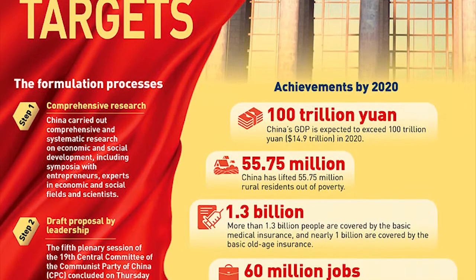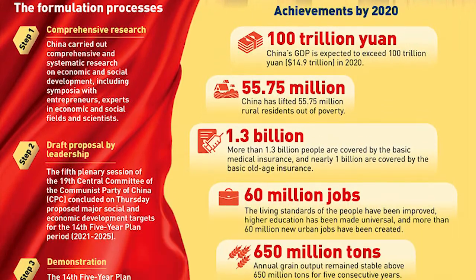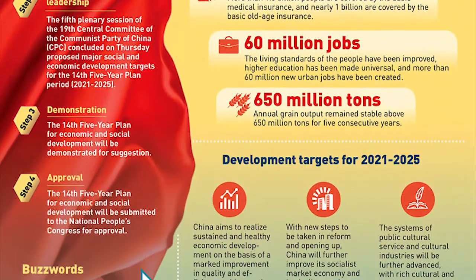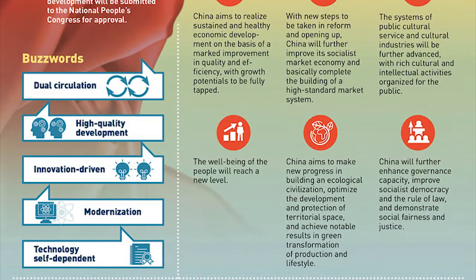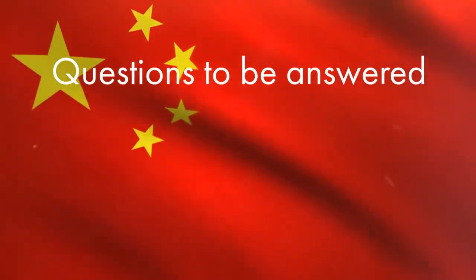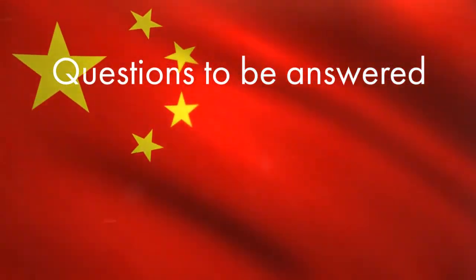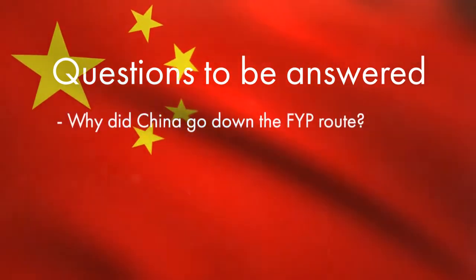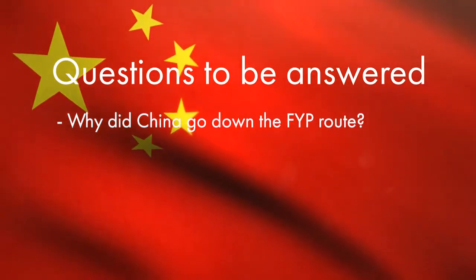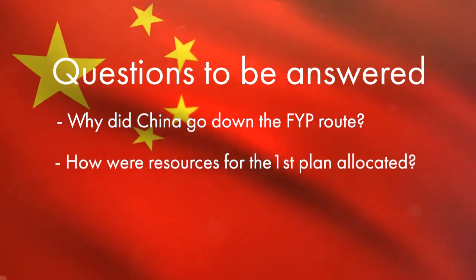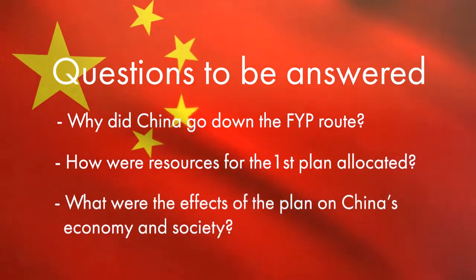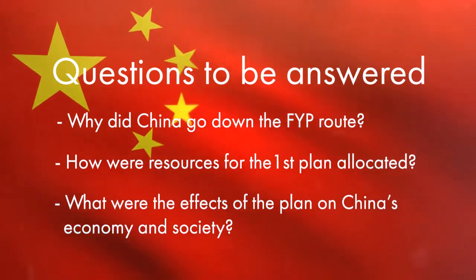They're currently on their 14th five-year plan as of 2020, though it looks very different to the first one, for obvious reasons. The major questions we'll be attempting to answer today are: where did this dedication to a singular model of economic development begin? What did the first plan look like? And what were the effects on the Chinese economy and society?